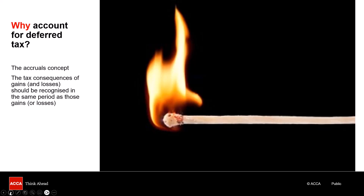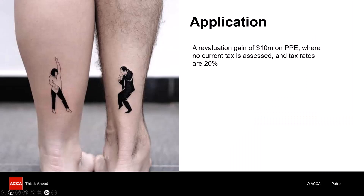Here's a small application of this principle. We've got a revaluation gain of 10 million on PPE and no current tax assessed, because the tax man will not give us a bill to pay when we've got a paper gain. Tax rates are 20% — you do not need a calculator. If we're going to match the gain with its tax implications, we're going to have to recognize an additional taxation expense of 2 million.